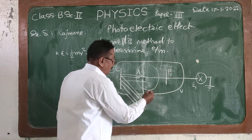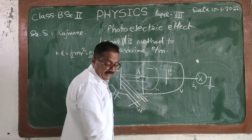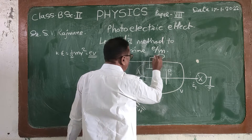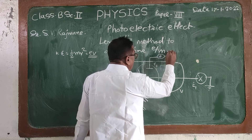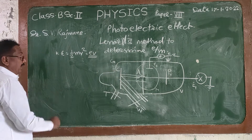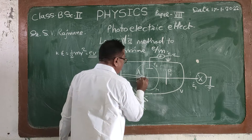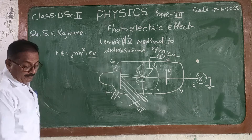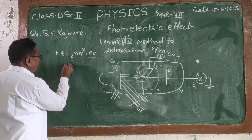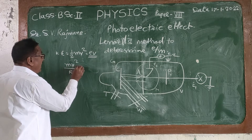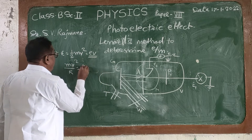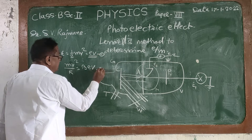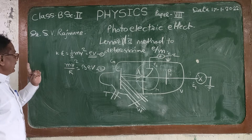When we apply a magnetic field, the electrons are deflected toward plate P2. Plate P2 is connected to electrometer E2. The force applied on the electrons by the magnetic field gives the equation: mv²/r = Bev, which is equation number two.